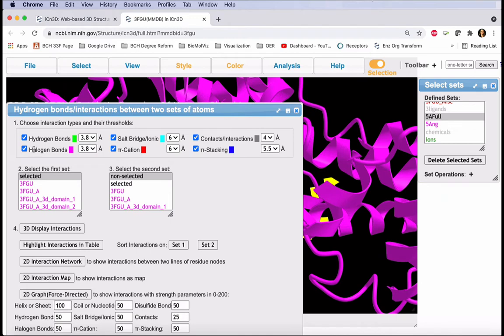This list comes up and shows comprehensive interactions. We only need a few of these, Hydrogen Bonds and Salt Bridges. For our first set, we'll select our ligands, and for our second set, we'll select the five angstrom active site.